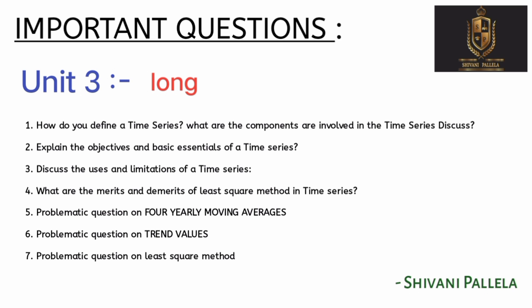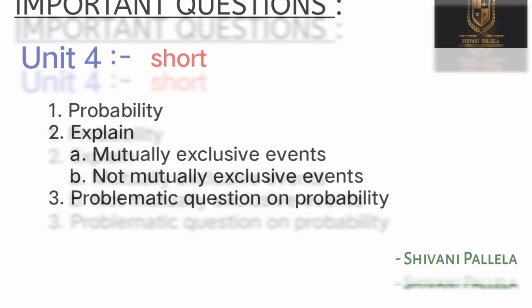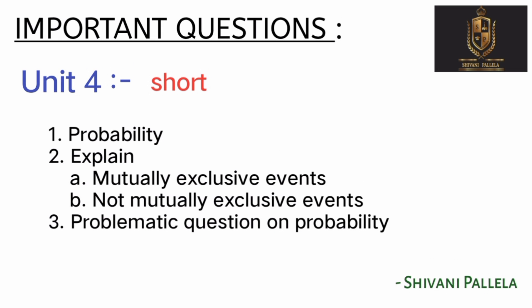In unit numbers 1, 2, and 3, that covers the problematic side. Unit 4 short has two questions on Probability — explain mutual exclusive events, non-mutual exclusive events, and probability problematic questions. For example: if you throw a die or toss a coin, what is the probability of getting a certain result? That is easy to practice.